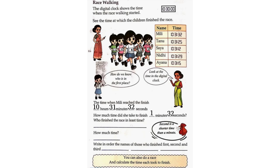Who finished the race in the least time? Saya. How much time? 1 minute 12 seconds. Write in order the names of those who finished first, second, and third: Saya, Ayana, Tanu.